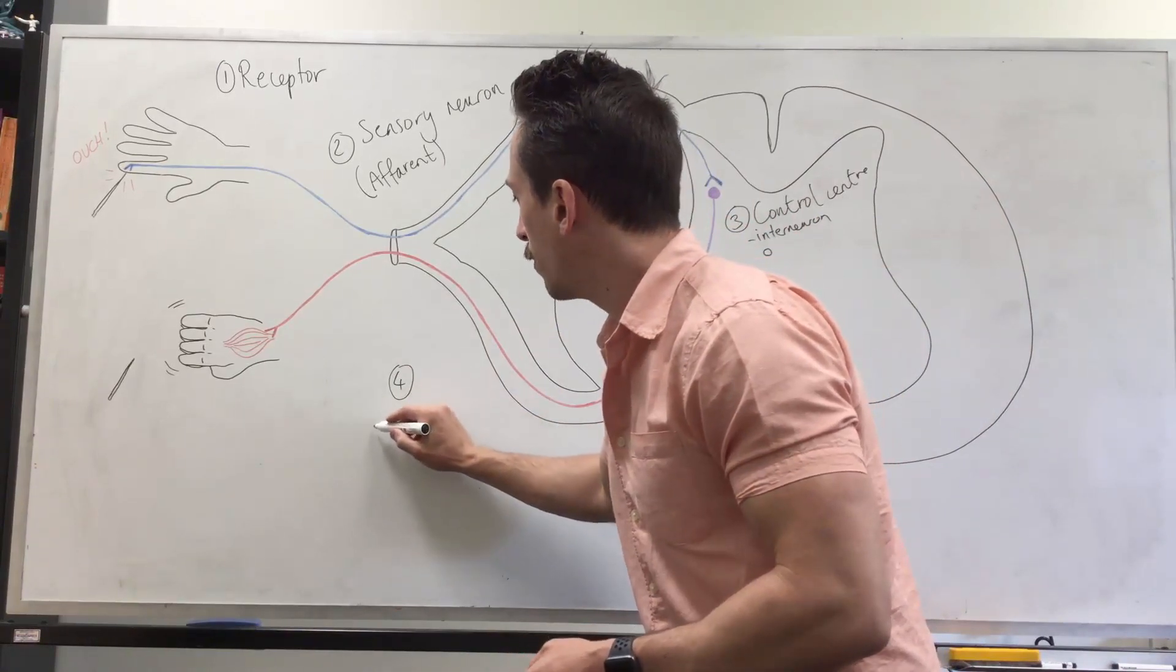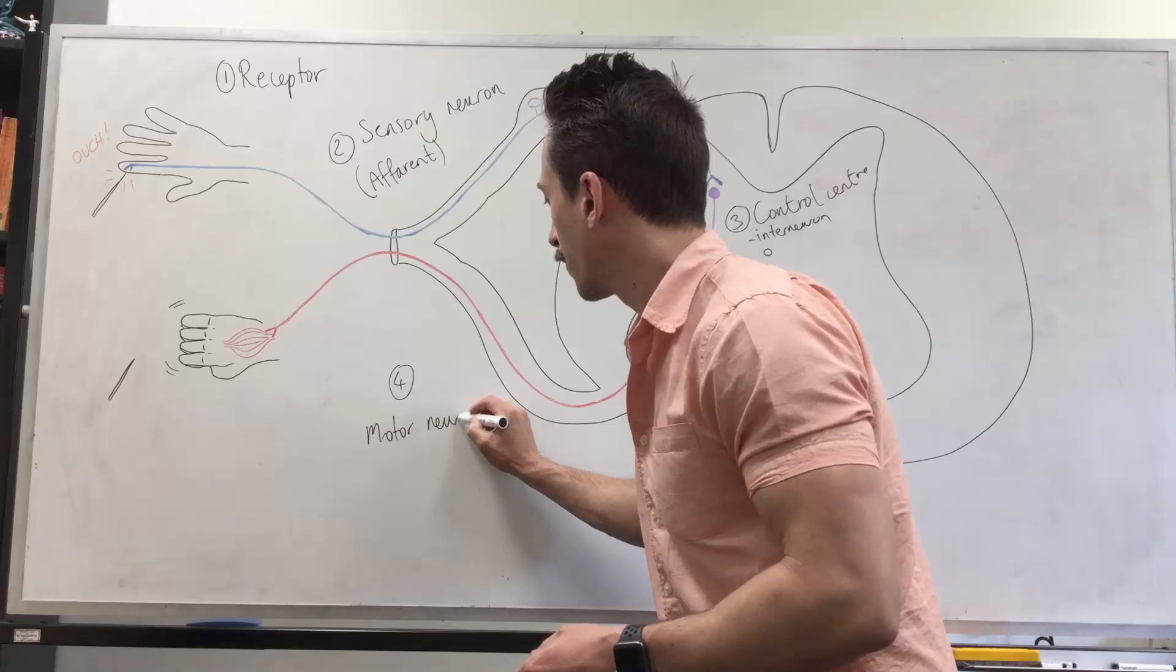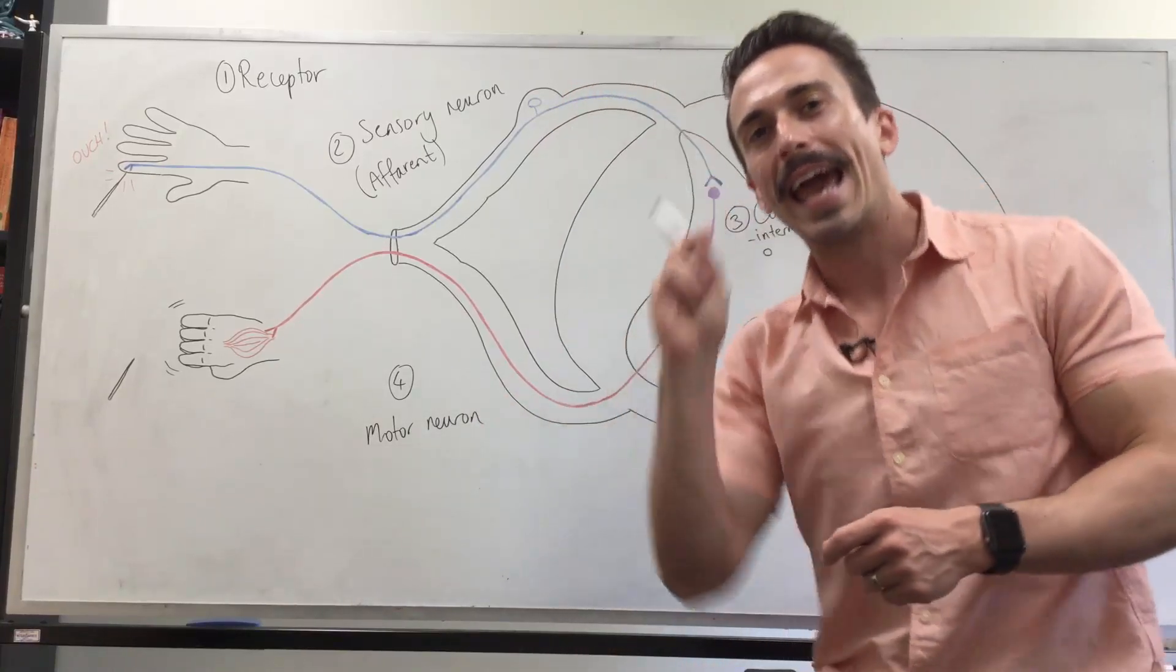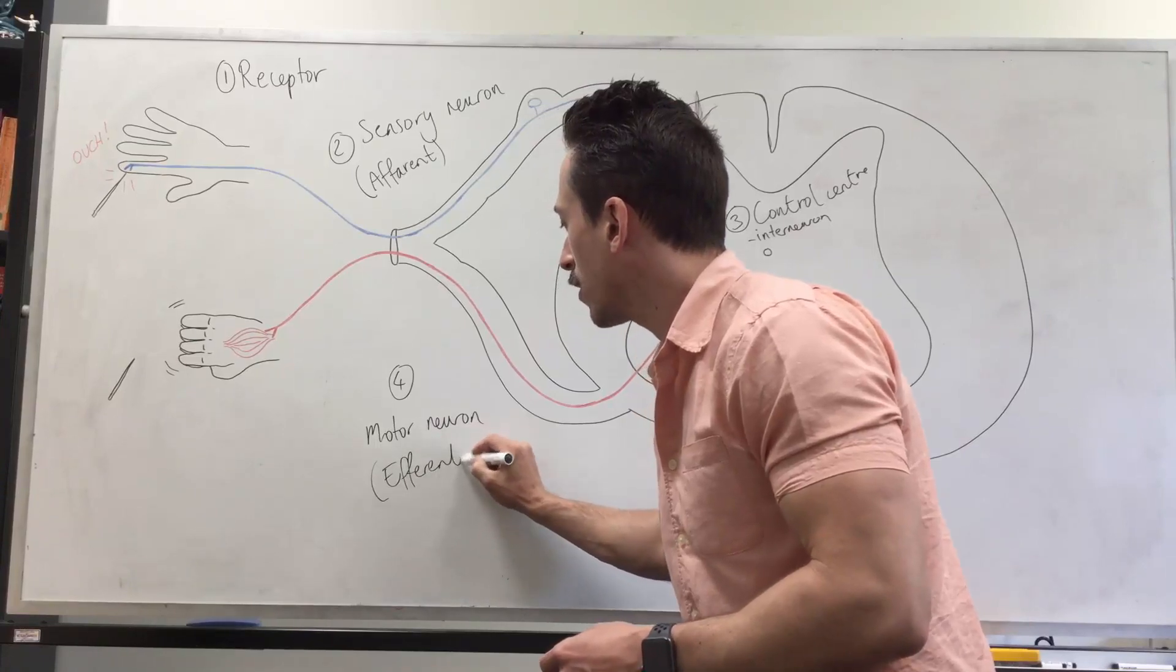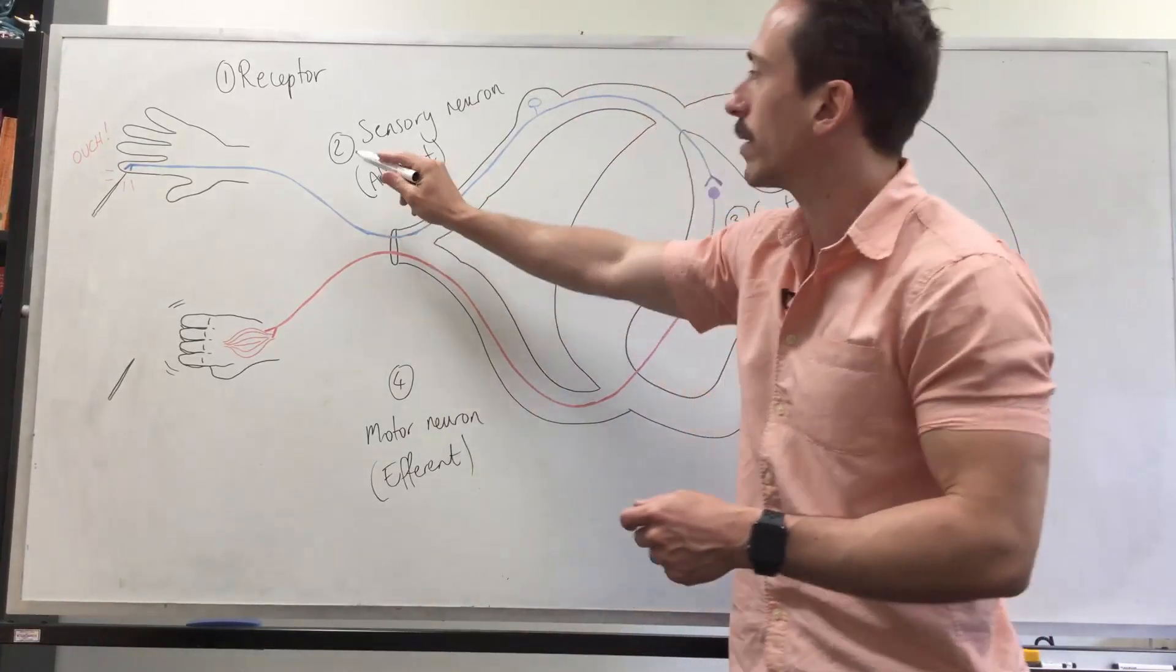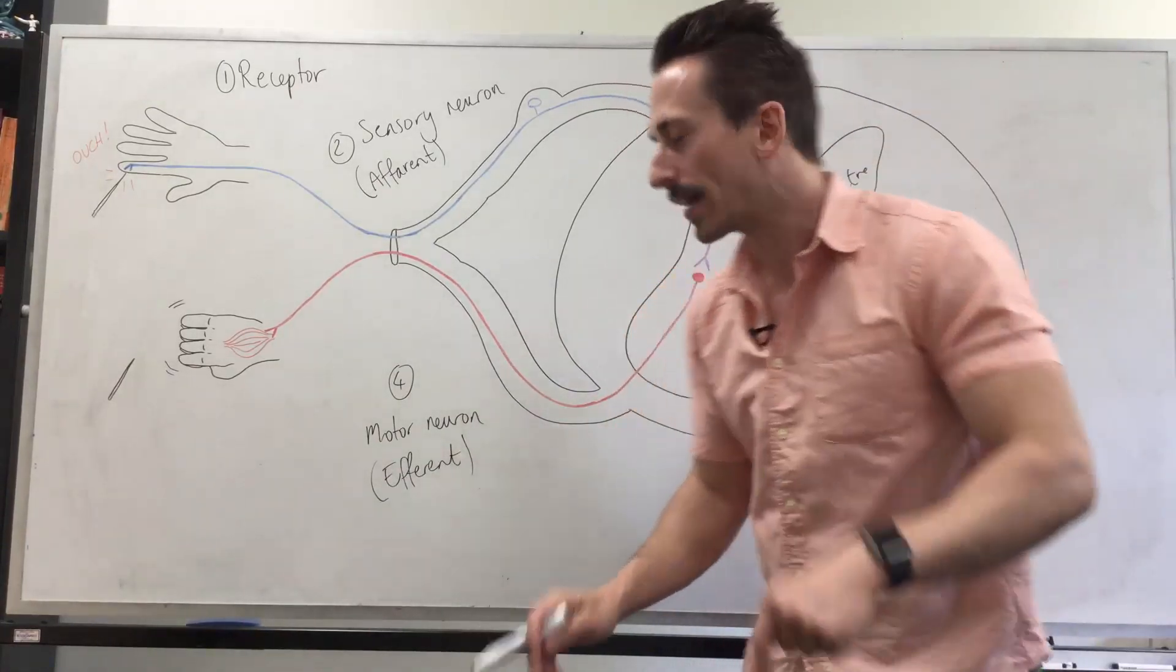Number four is the motor neuron, also known as an efferent neuron or sending an efferent signal. Now how do you remember the difference between an afferent signal and an efferent signal? An efferent signal goes to the effector.